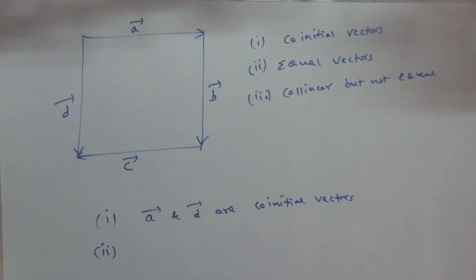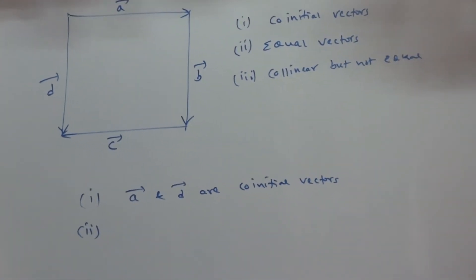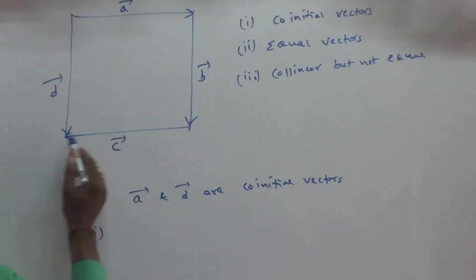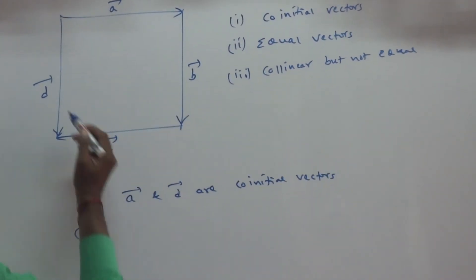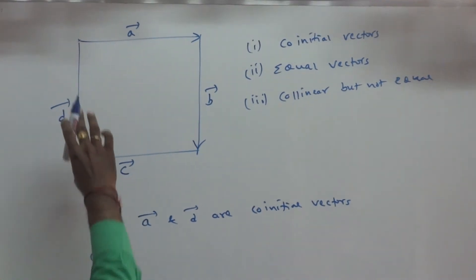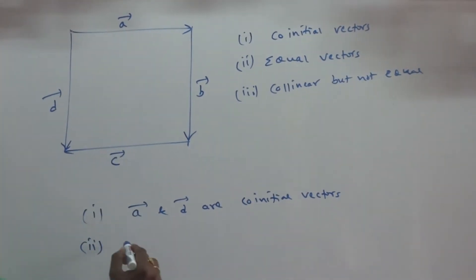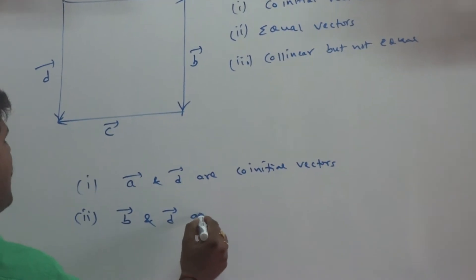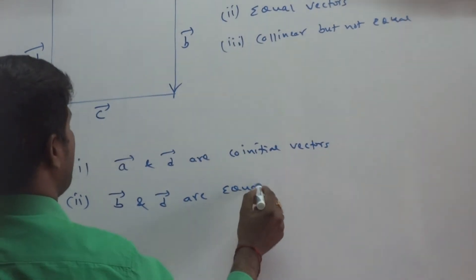Here, what is vector A? Direction is the same. Vector C, direction is the same, not possible. But vector B and vector D, direction is the same. And magnitude is also the same. Vector B and vector D are equal vectors.